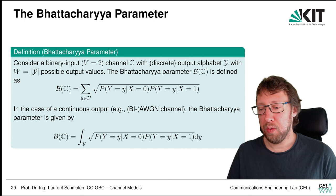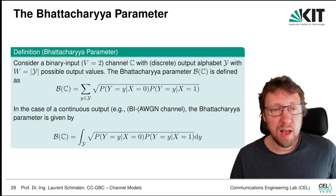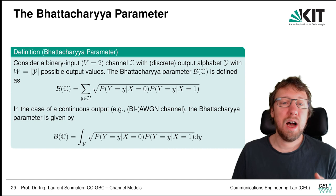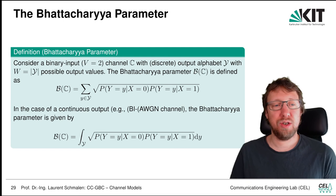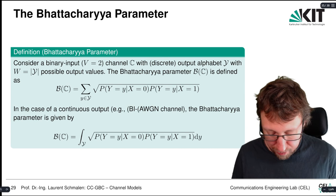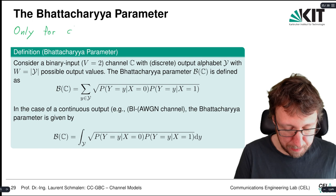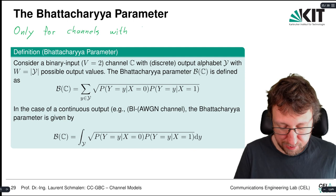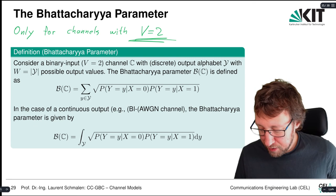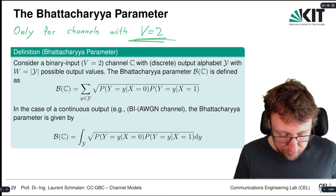Finally, we introduce the Bhattacharyya parameter — a parameter that quantifies how good or bad (noisy) the channel is. It is defined only for channels with V = 2 (binary input channels).